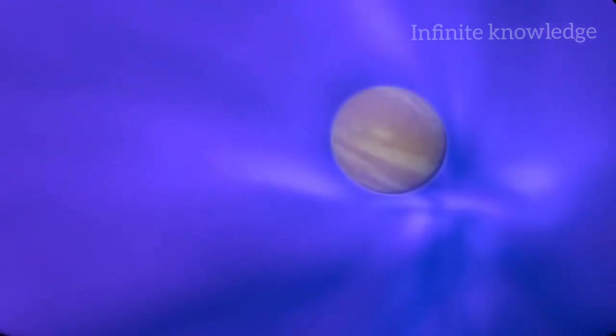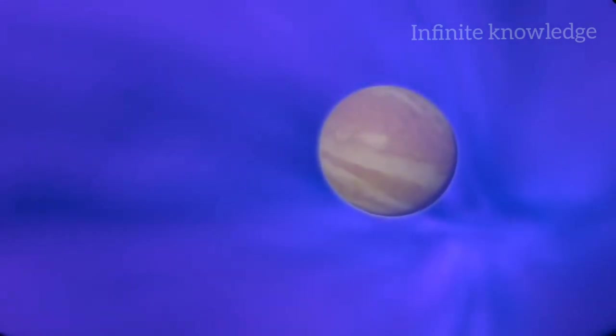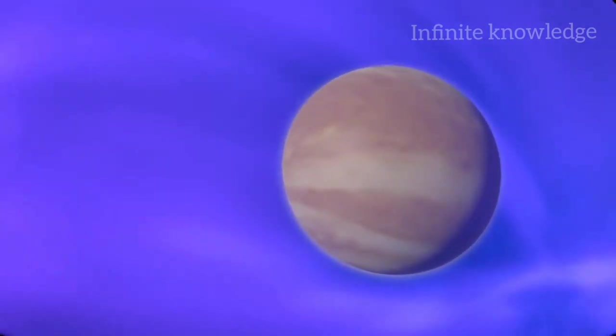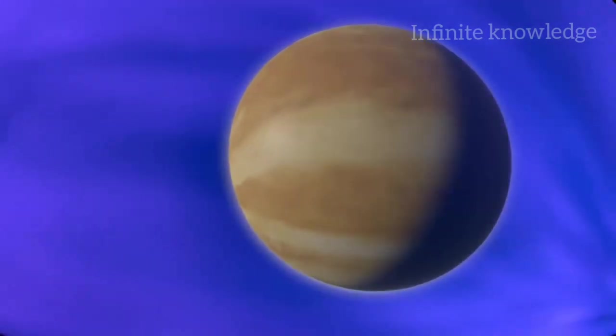Venus is the size of Earth, but rotates so slowly that no dynamo could form in its core. The solar wind bombards its atmosphere directly.